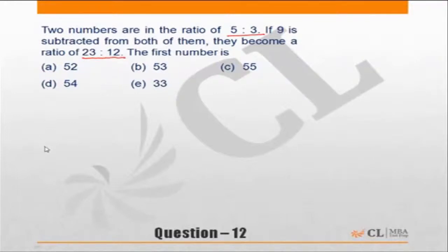Again, let's go to the conventional method. The conventional method for this question is let the numbers be 5x and 3x. So you subtract 9 from both of them and this ratio becomes 23 by 12. Perfectly fine. Nothing wrong with it except that it is time consuming.